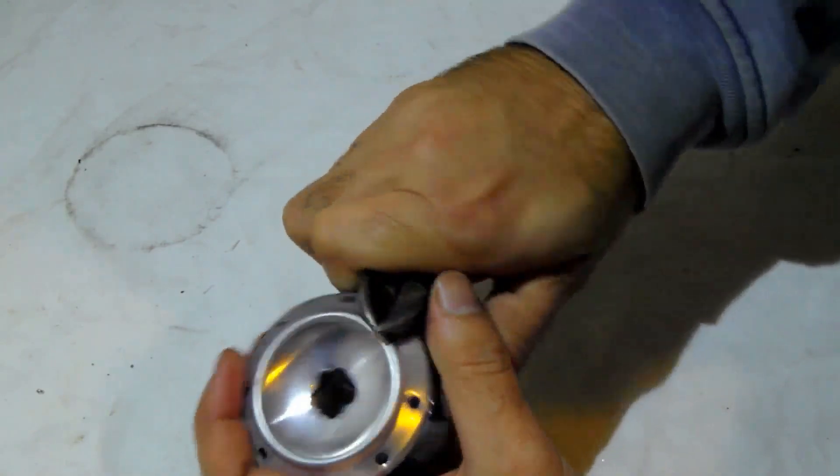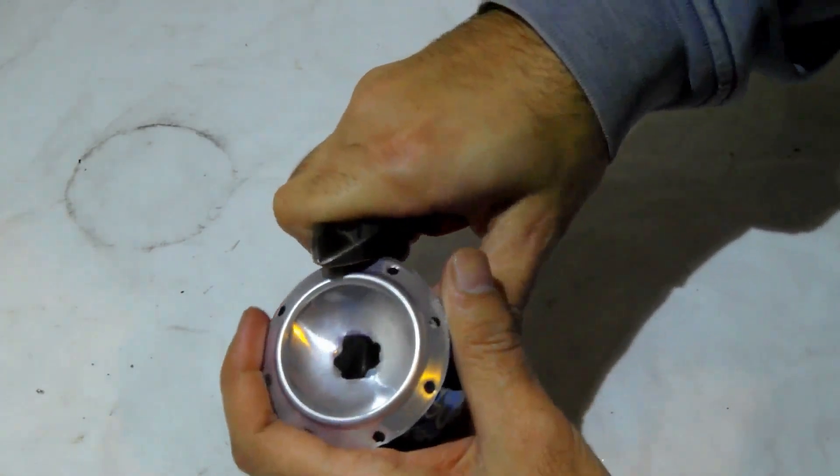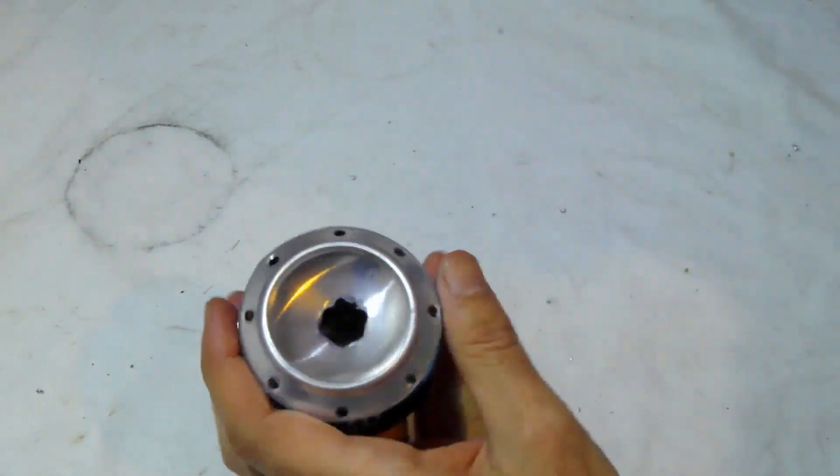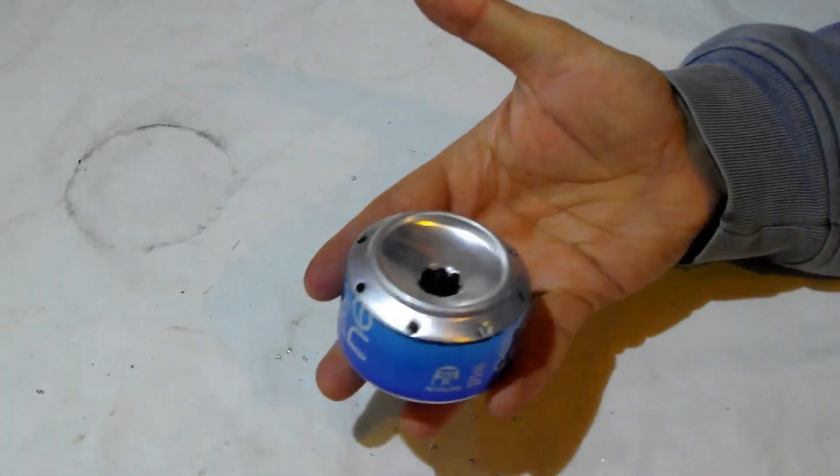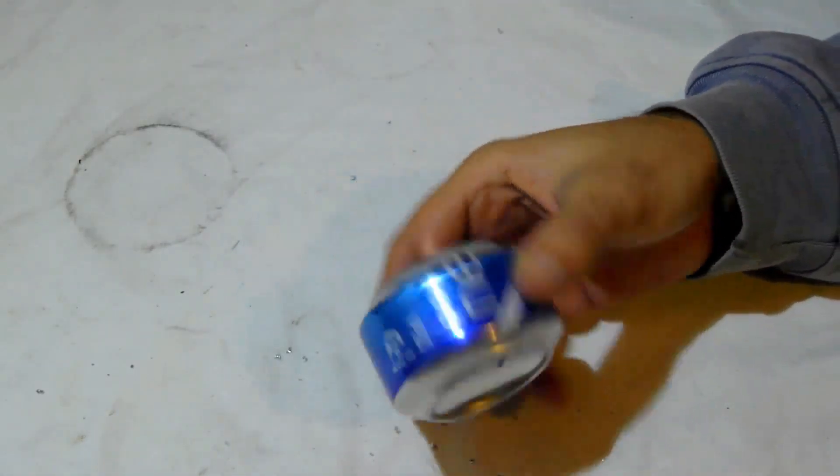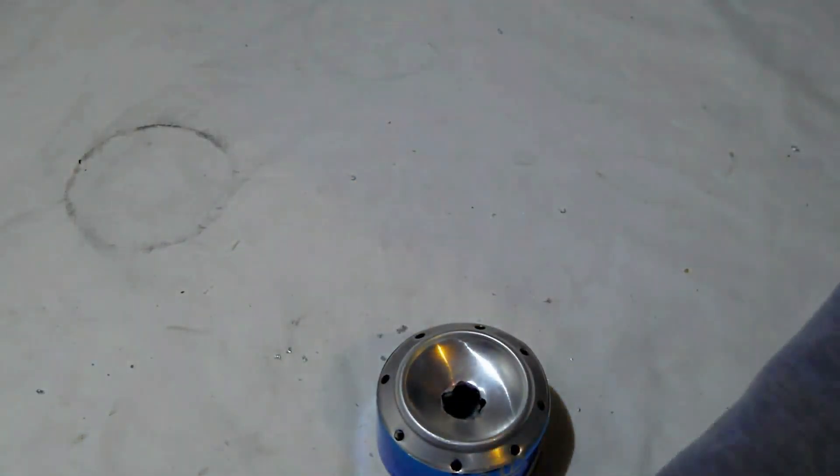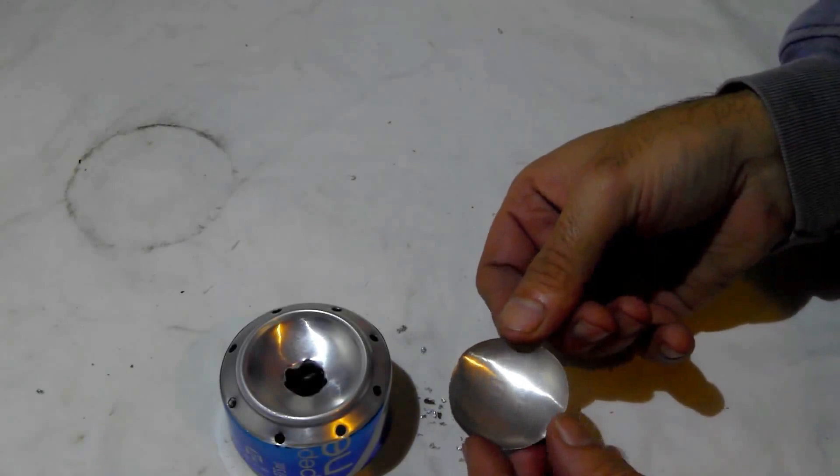So there you are, one very easy to make alcohol stove. Now of course you can see it's been cut into that.